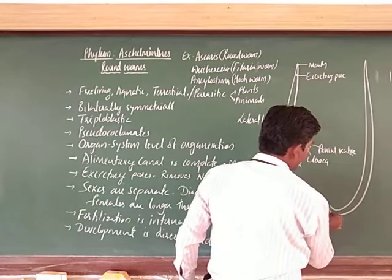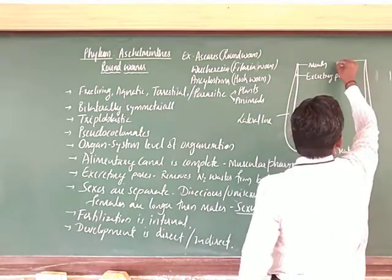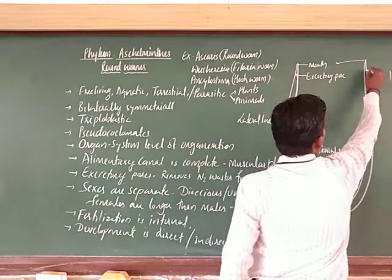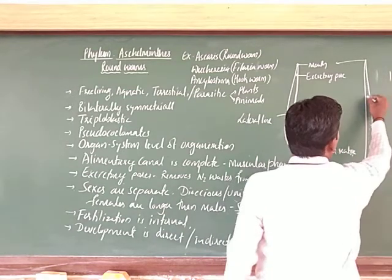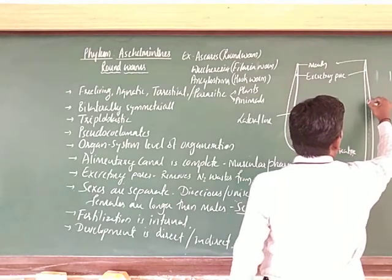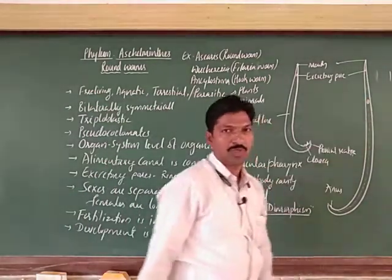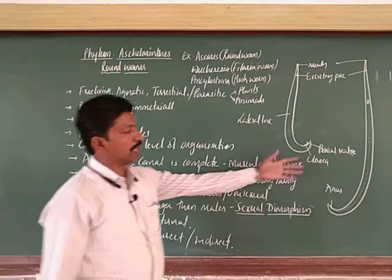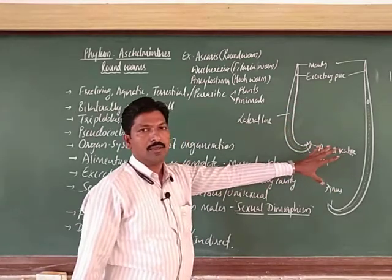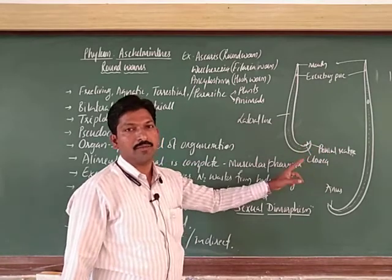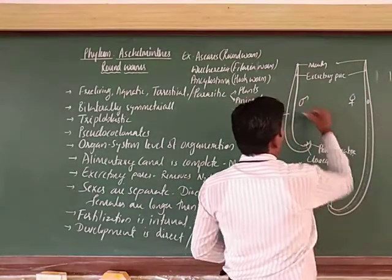It is also a cylindrical body. Here, there is the same mouth and a lateral line. There may be an excretory pore and a gonopore for reproduction, sexual reproduction. I have drawn two diagrams here — one is short and another one is long — indicating that male and female are different. This one is the female and this is the male animal.